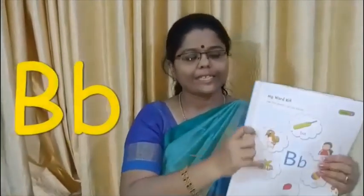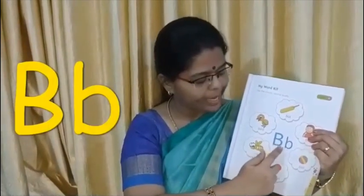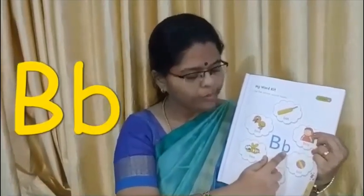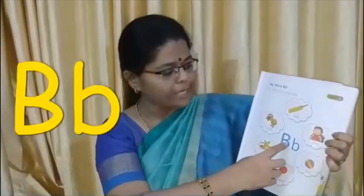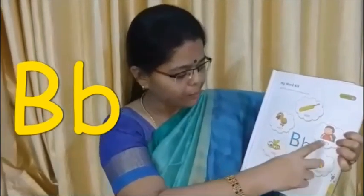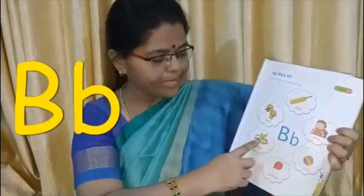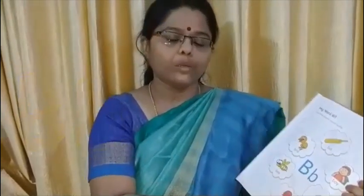Next we will move on to the next letter. The next letter is B. This is capital B and this is small b. The sound of B is 'b'. What is it, children? B. B — bat. B — bird. B — boy. B — bee. B — ball. And B — balloon.